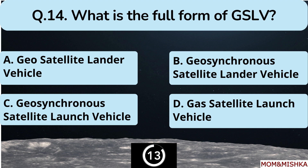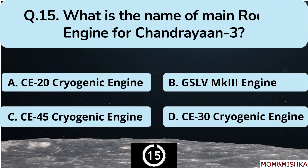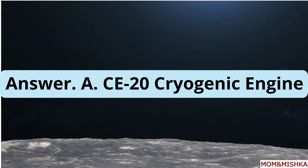What is the full form of GSLV? It's Geosynchronous Satellite Launch Vehicle, option C. What is the name of the main rocket engine for Chandrayaan-3? The answer is option A: CE20 Cryogenic Engine.